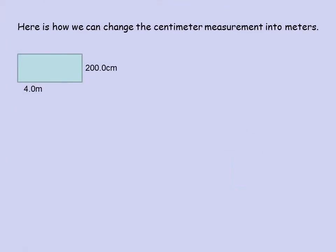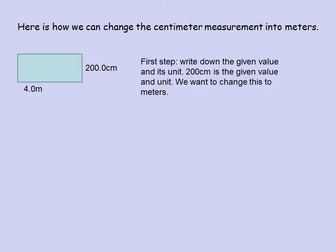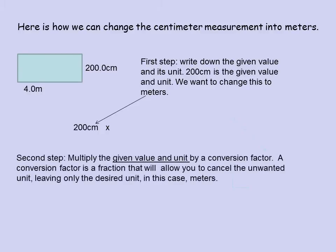Here's how we can change the centimeter measurement to meters. The first step is to write down the given value and its unit, and we want to change this to meters. The second step is to multiply the given value and its unit by a conversion factor. A conversion factor is a fraction — a true fraction — that will allow you to cancel the unwanted unit, in this case centimeters, both above and below the division line, so they cancel out.